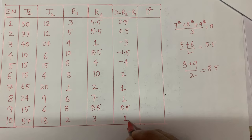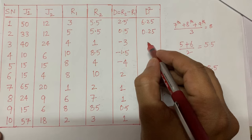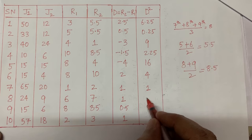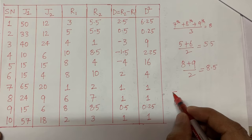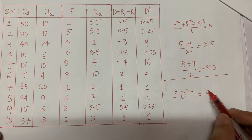Now I square each difference d². The squared values are: 6.25, 0.25, 0.25, 1, 9, 2.25, 16, 4, 1, 1, 0.25, and 1. The summation of d² — the total of all these values — comes out to 41.